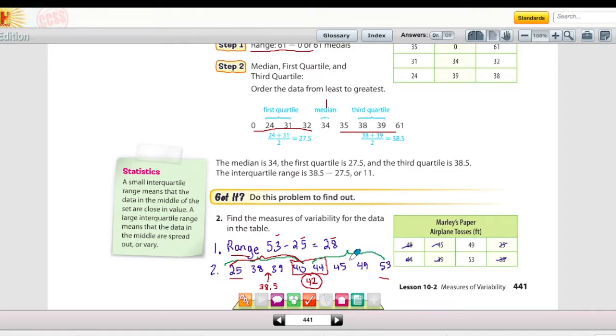And then my third quartile is going to be 44 over to the highest data point, 53. So between 45 and 49, which is 47.